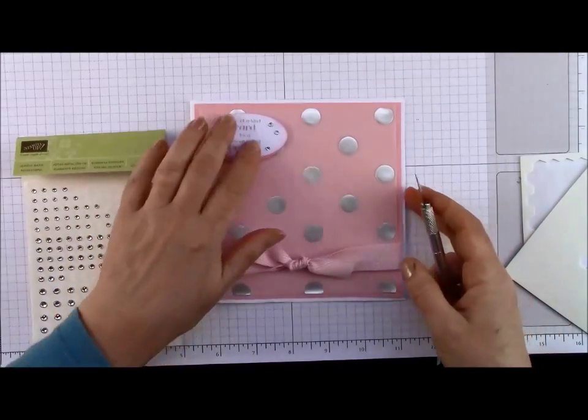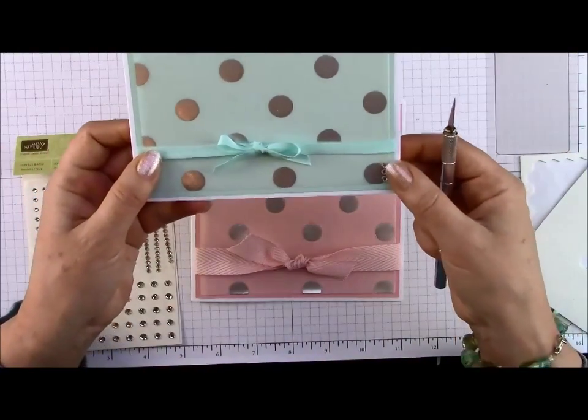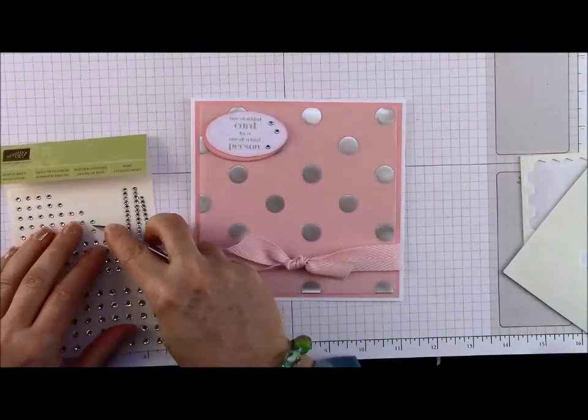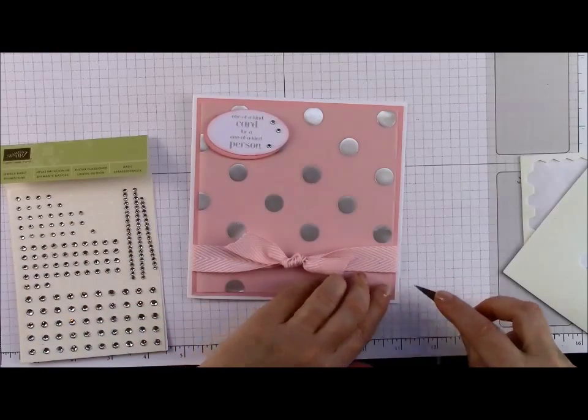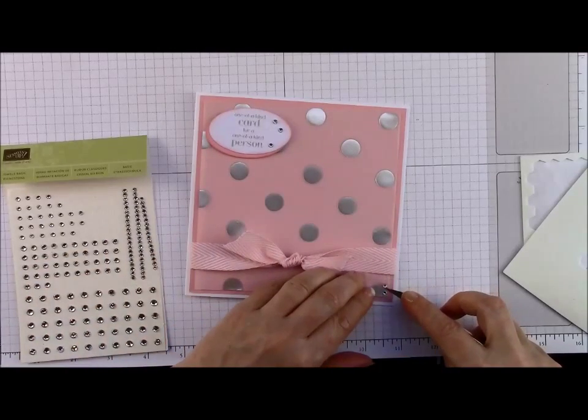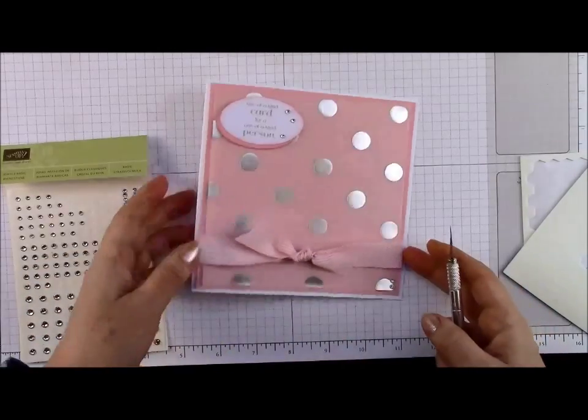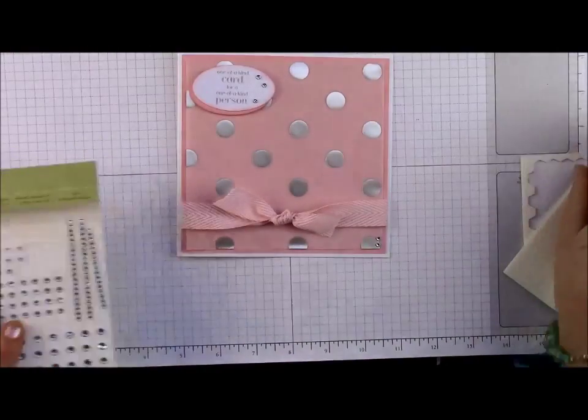So I've done that and then you can leave it like that or as with this one I've also brought some diamantes down into the bottom corner. So I might just pop a couple there. I think that's enough because that's a thicker ribbon. I probably can get away with two whereas I use three for the other one.